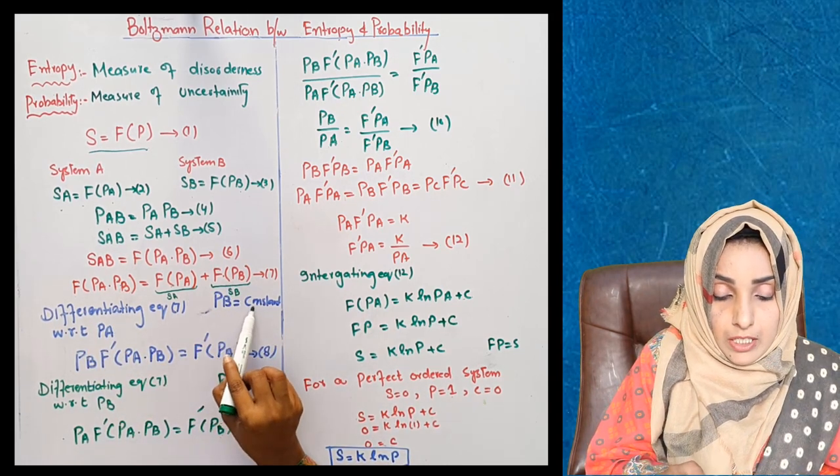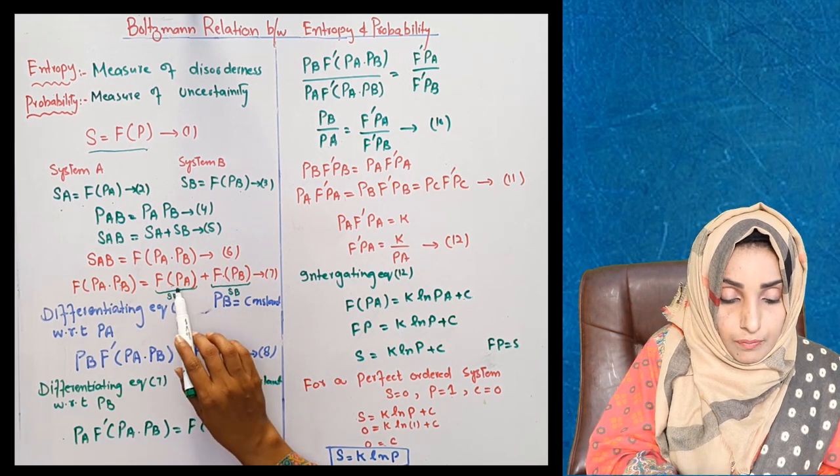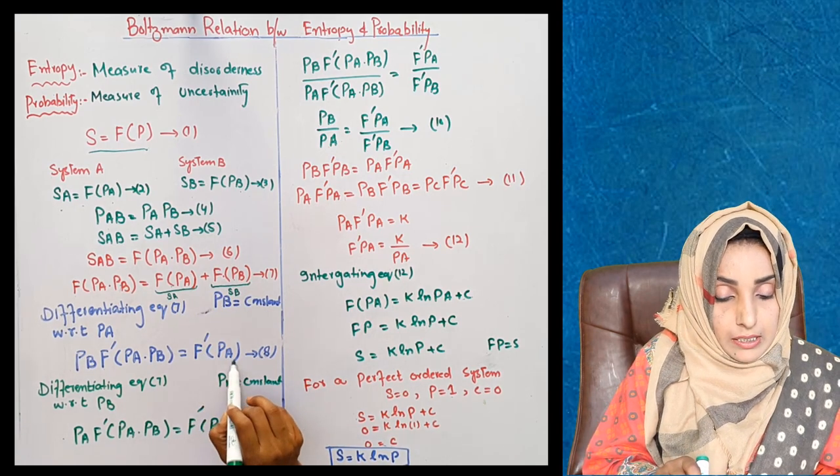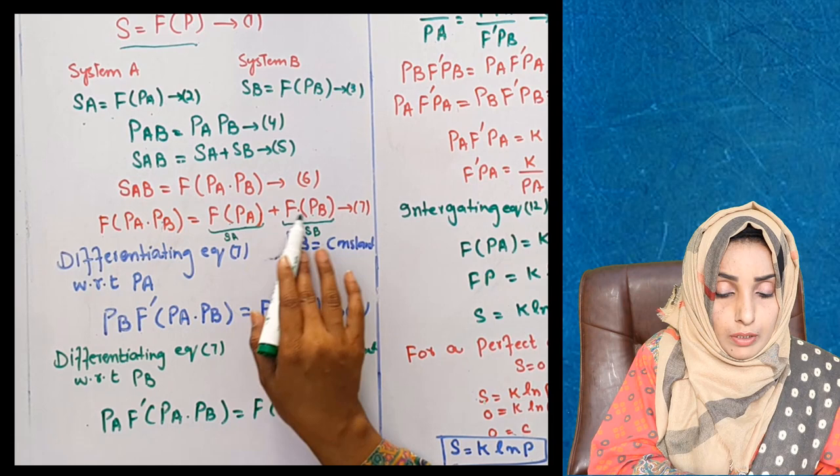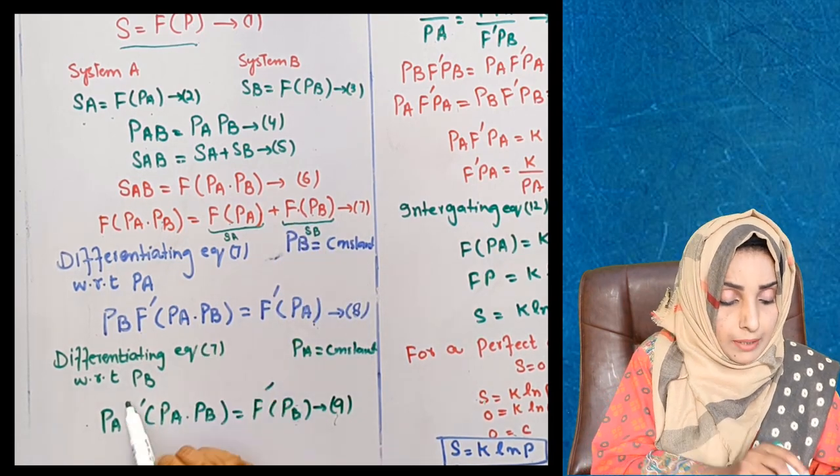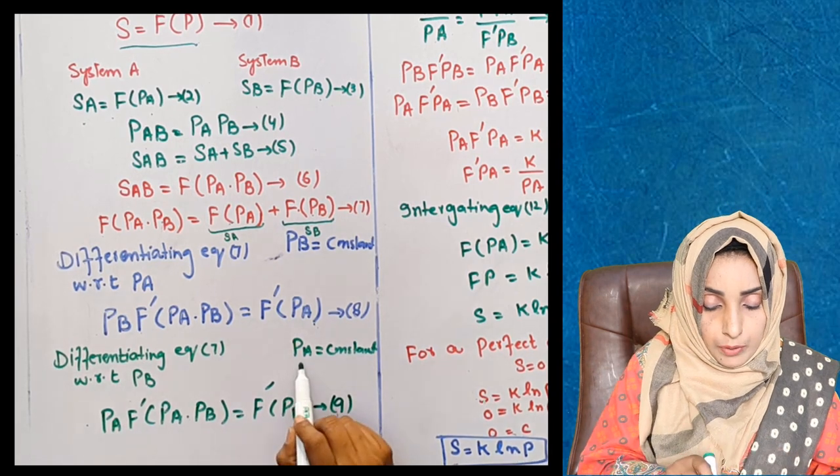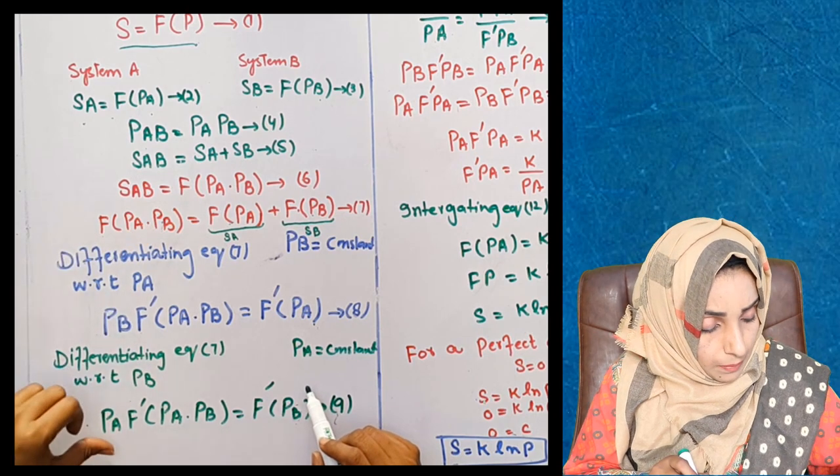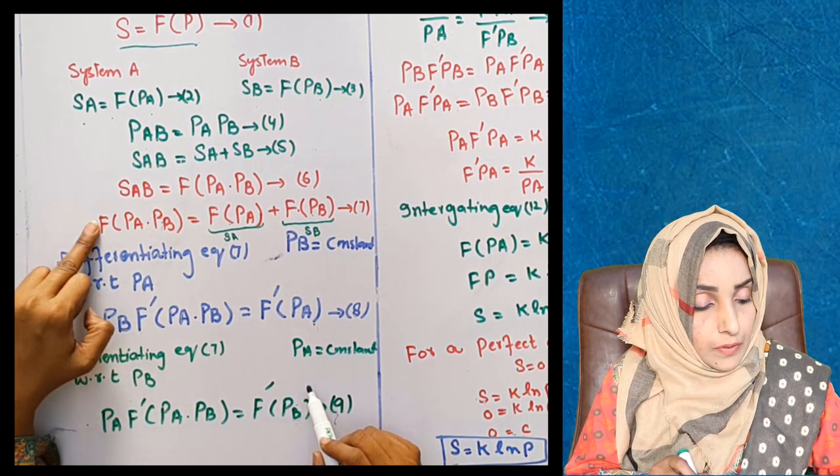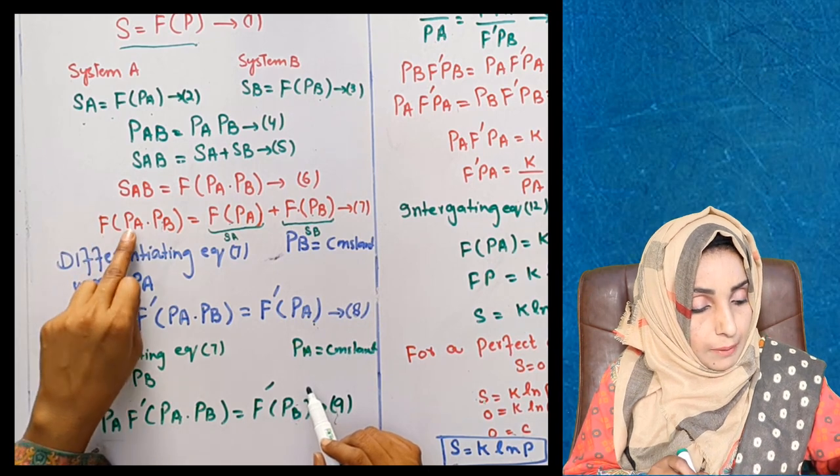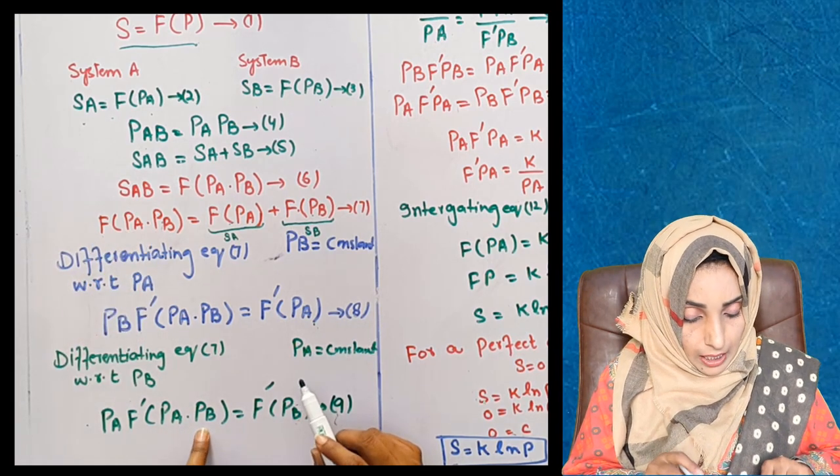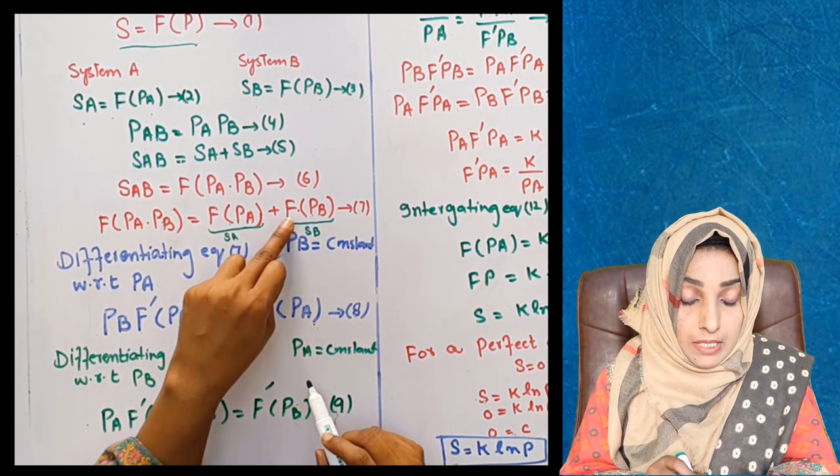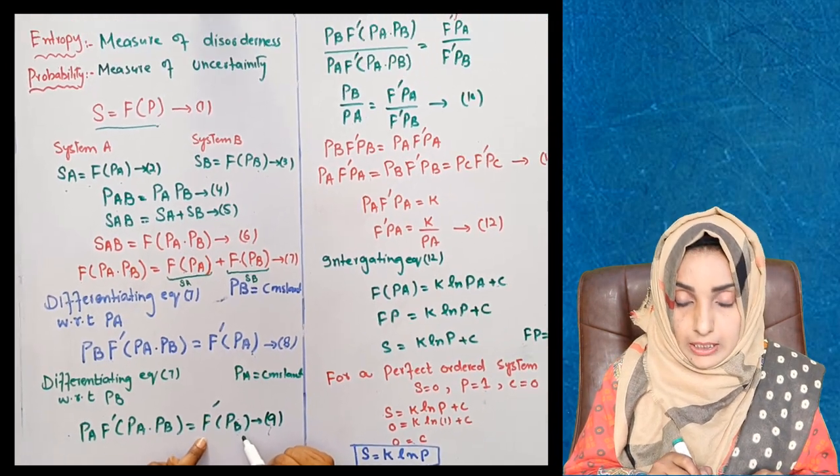Similarly, P(B) is constant, so the function of probability of system A will come in F prime form. The same differentiation rule will be applied on equation number 7 when we differentiate with respect to P(B) and keep P(A) constant. P(B) will be divided, P(A) will remain. When we differentiate F, it becomes F prime. After that, since P(A) is constant, its value becomes zero. And we take the entropy of system B as equivalent.